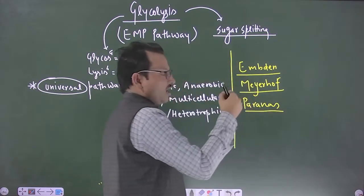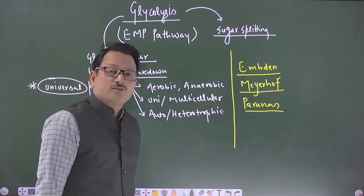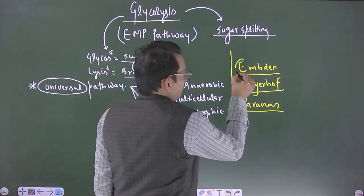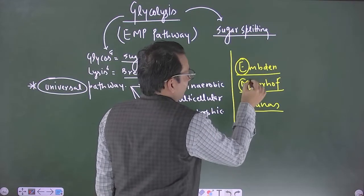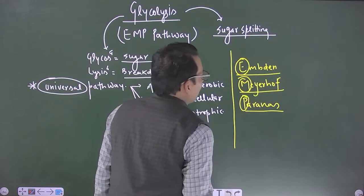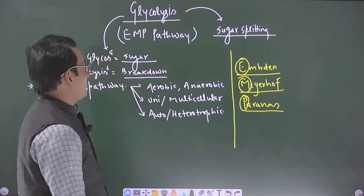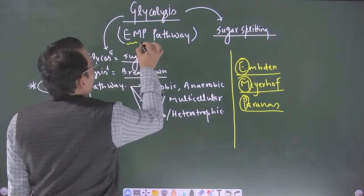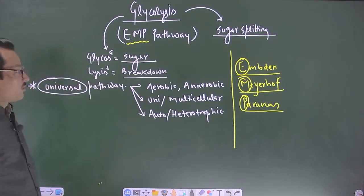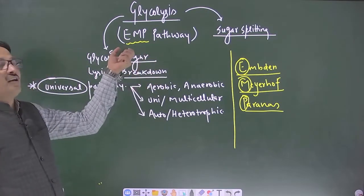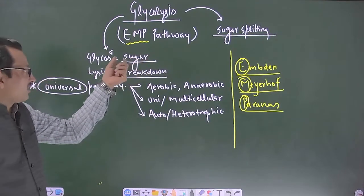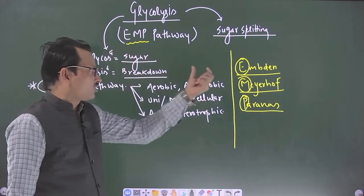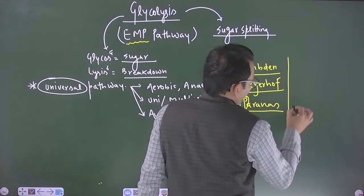As I have written the name in short form, it is to signify that the first alphabet of all these three names that is EMP are taken and it is collectively named as EMP pathway. EMP pathway is a mnemonic where you can understand that it is based on the names given by their propounders or discoverers.